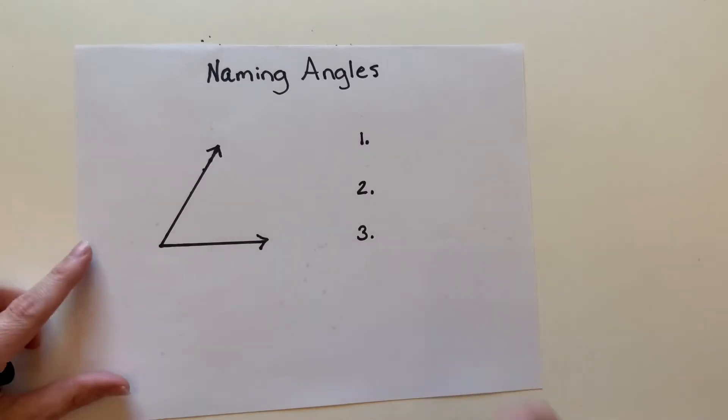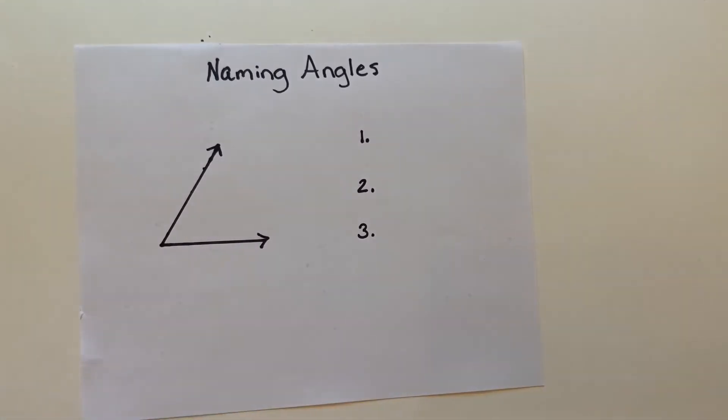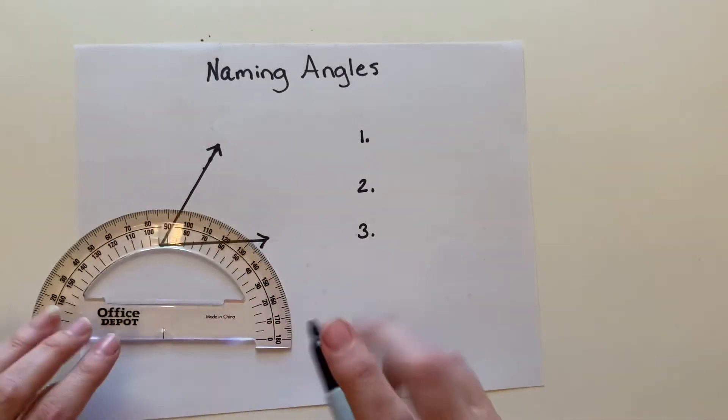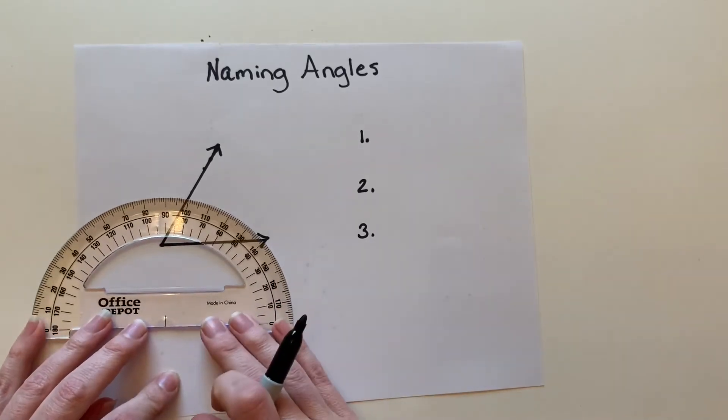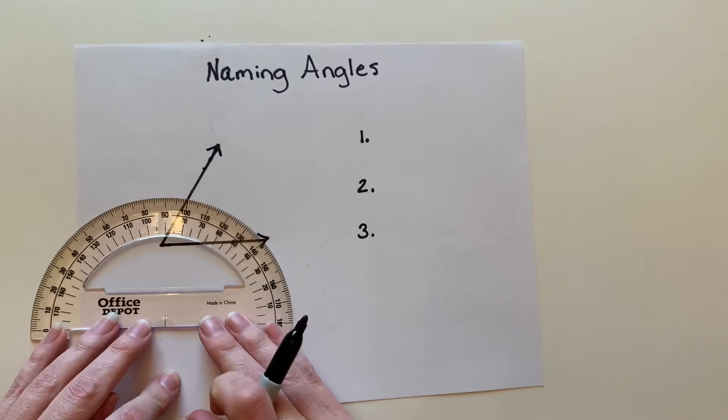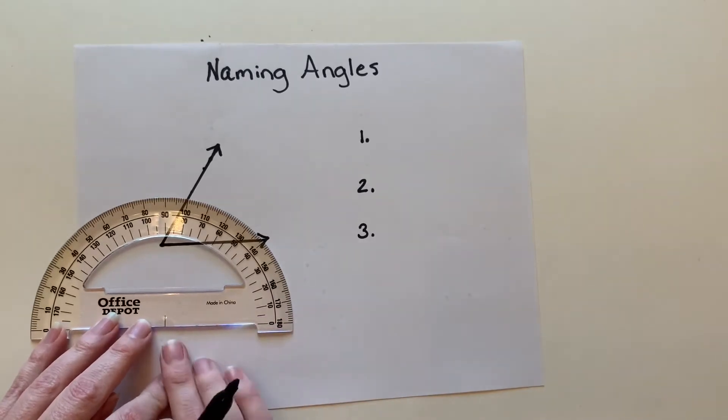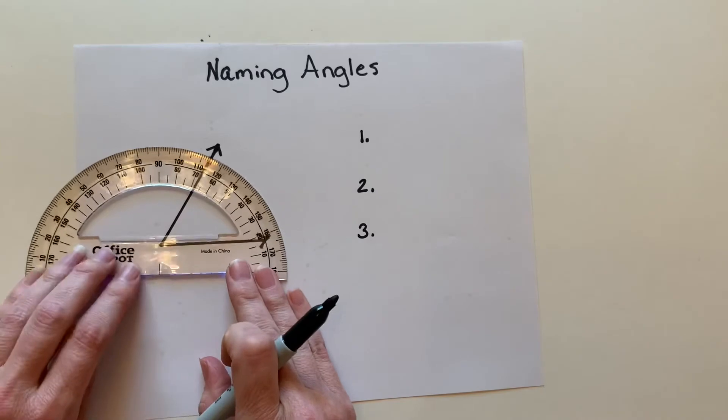So this angle here, which I showed you in the last video how to measure with a protractor, we're going to continue to do that throughout the videos I'm going to be doing here, just so you can see the idea of how it works. Again, here's your center point. We're going to put it right here on what's called our vertex and line it up.